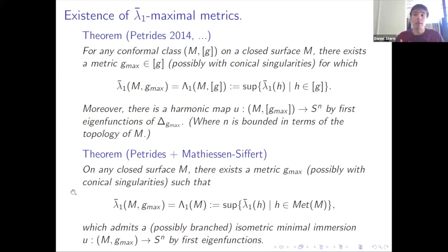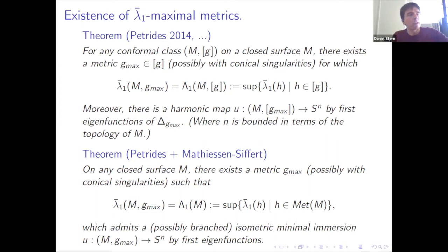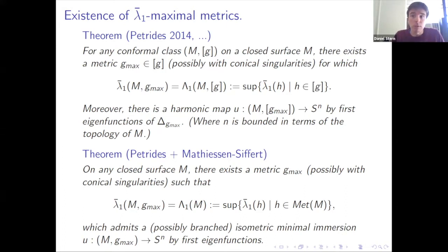Now we know the maximization problem can always be solved. As an aside, there's a similar theory for maximizing higher eigenvalues, but in general you don't expect nice metrics with conical singularities maximizing — you expect configurations where the surface splits into pieces with bubbling phenomena. The first eigenvalue is the case where this is best understood, where you expect the most regularity from your maximizing metrics, and they give you these minimal immersions.